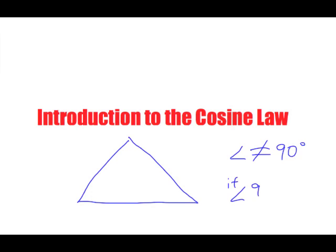So if the angle is equal to a 90 degree angle, pretty much you can use the Pythagorean theorem to find sides, and you can use cosine ratio, tangent ratio, or sine ratio — pretty much what we're looking at is SOH-CAH-TOA.